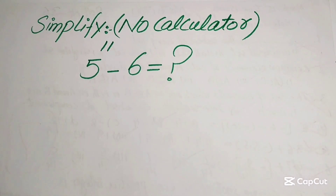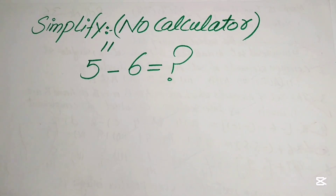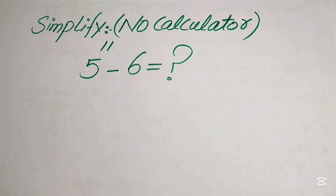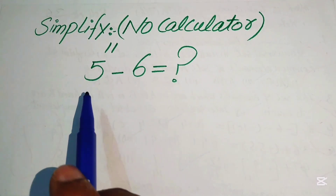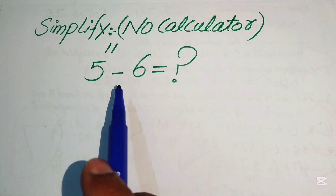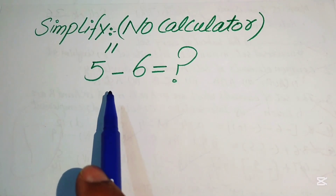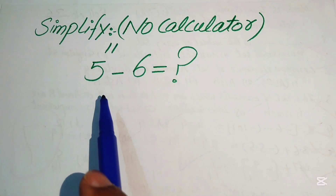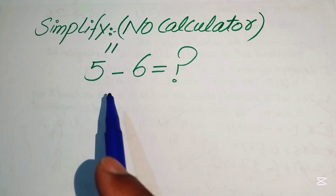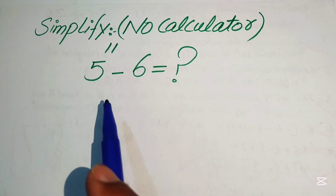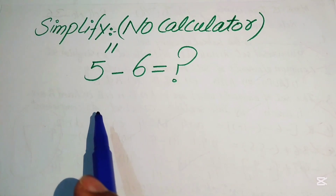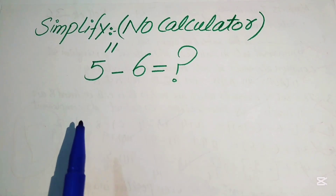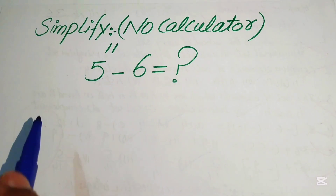Hello everyone. How to simplify this nice algebraic expression without using the calculator. We have 5 to the power of 11 minus 6, and we want to write this in simplified form. The calculator is not allowed — we can do all of these things in our head.